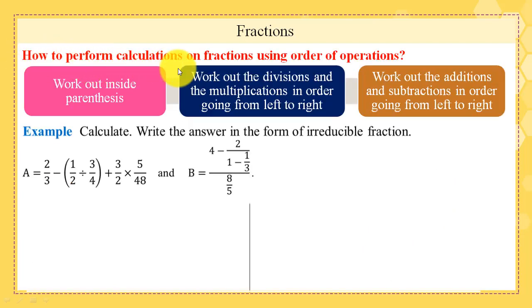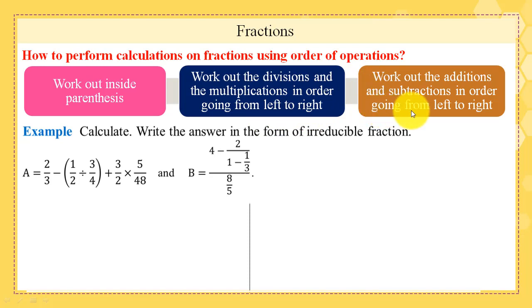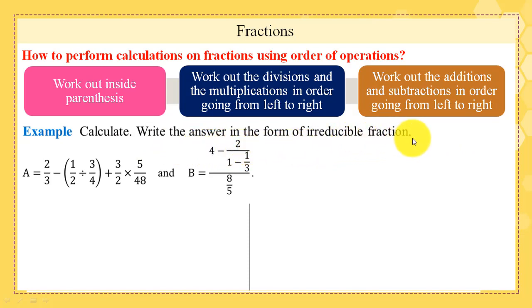Now, how to perform calculations on fractions using order of operations. First step: work out inside parentheses. Second step: work out divisions and multiplications in order from left to right. Third step: work out additions and subtractions, also going from left to right. As an example, calculate a and b and write the answer in the form of irreducible fractions.